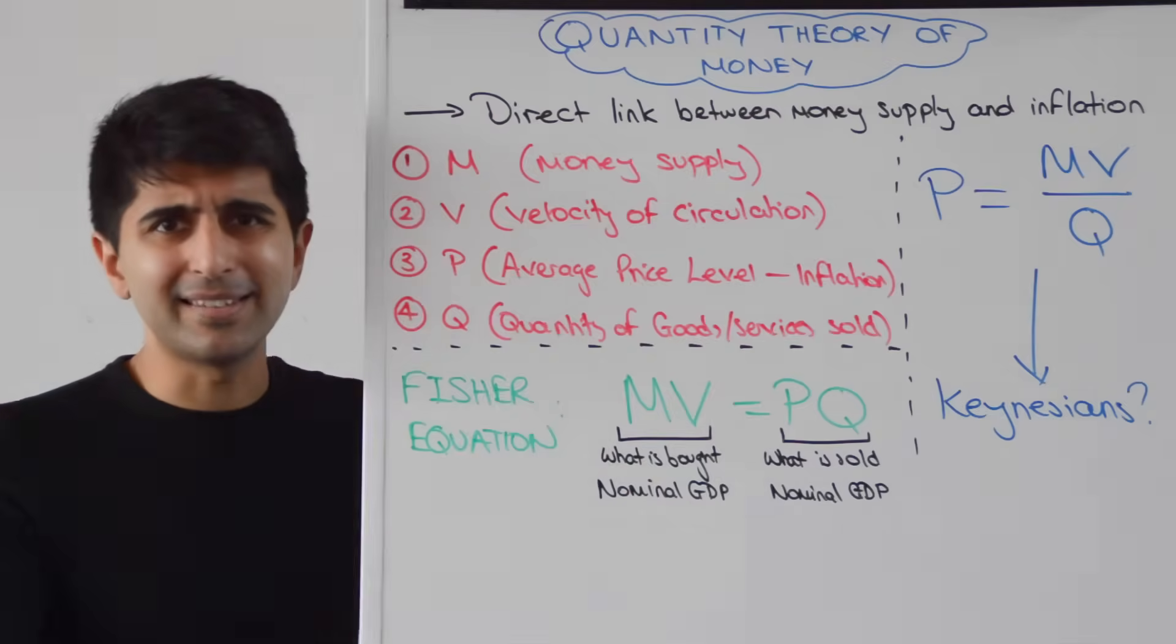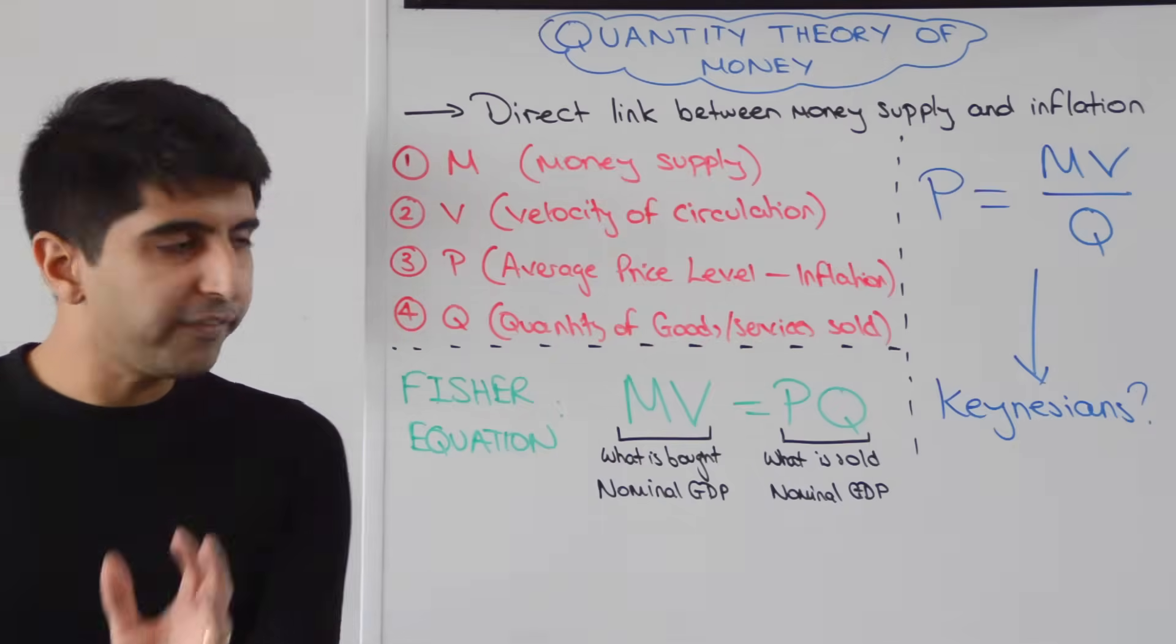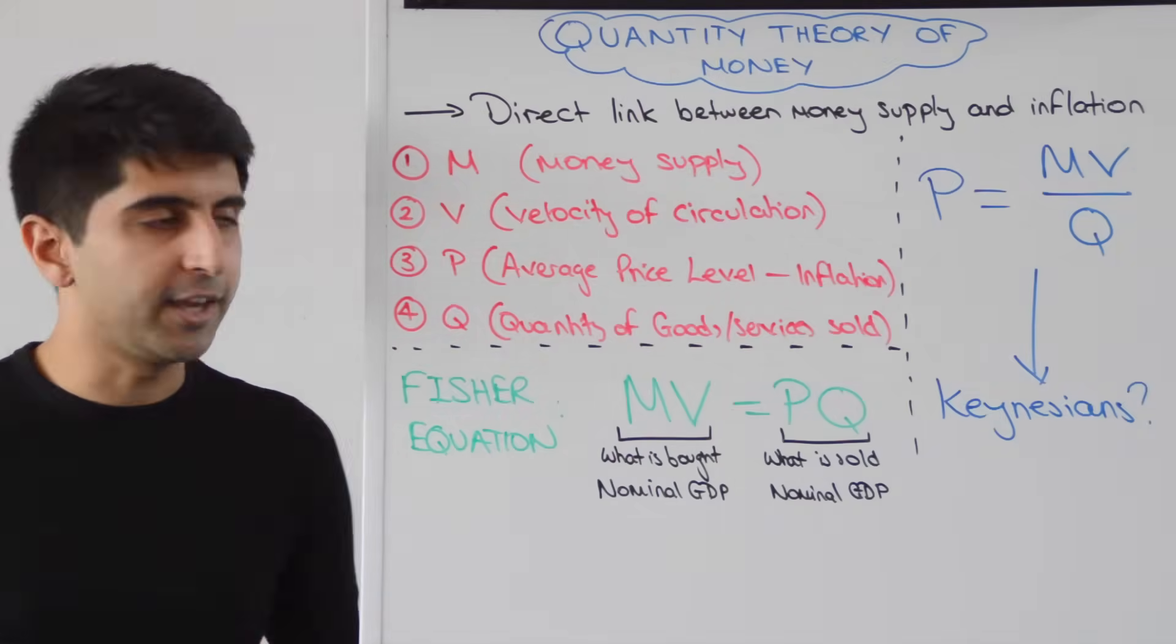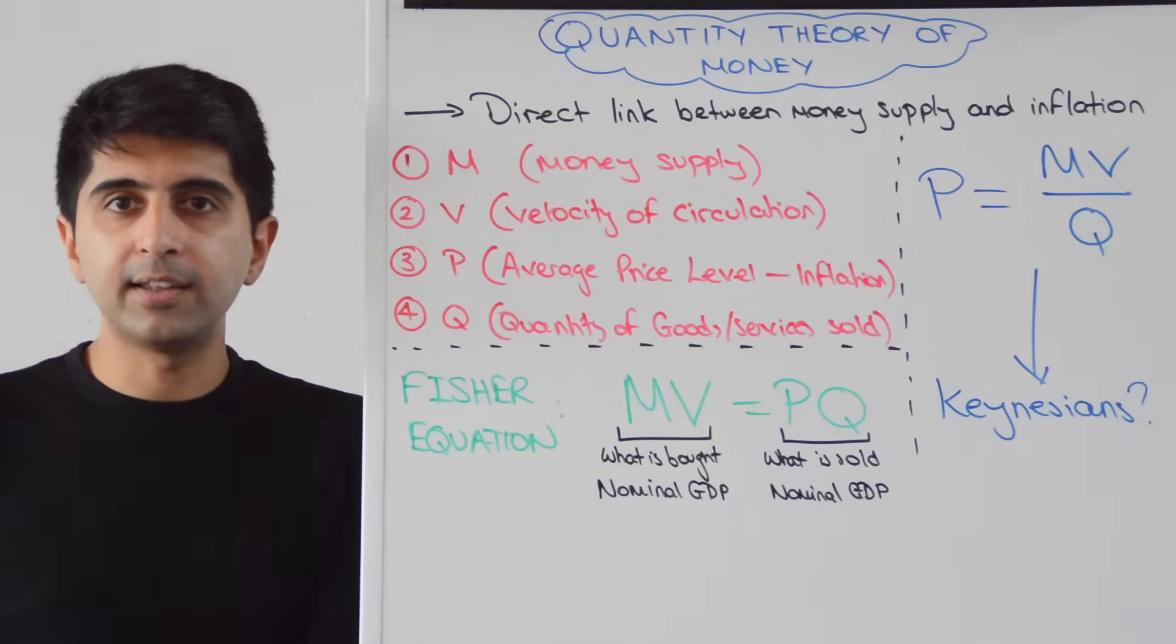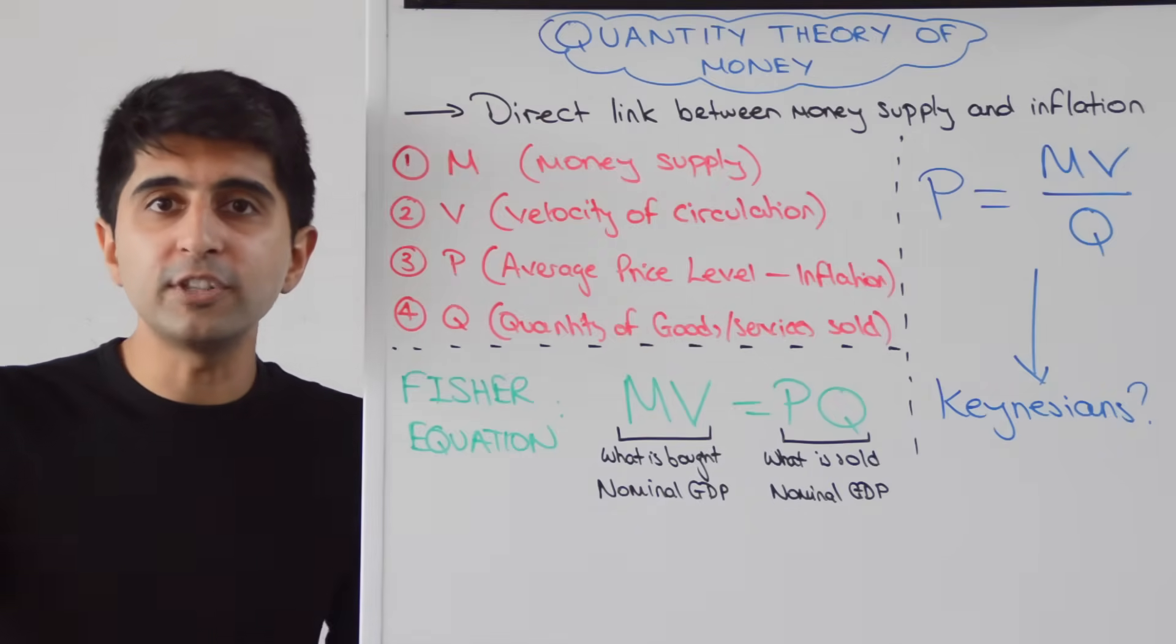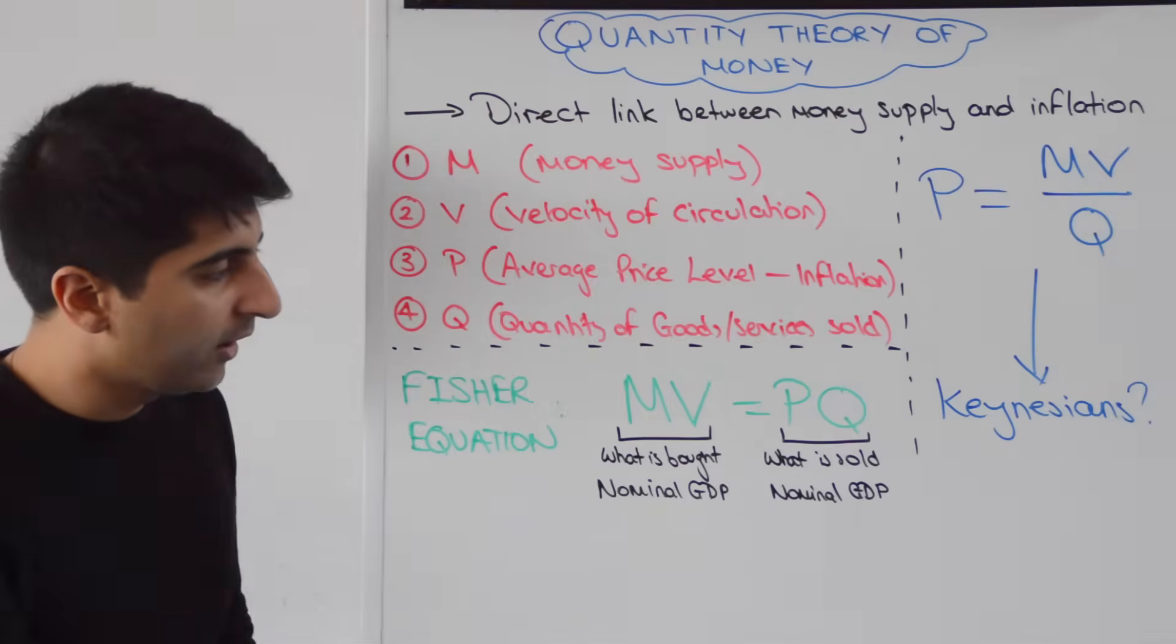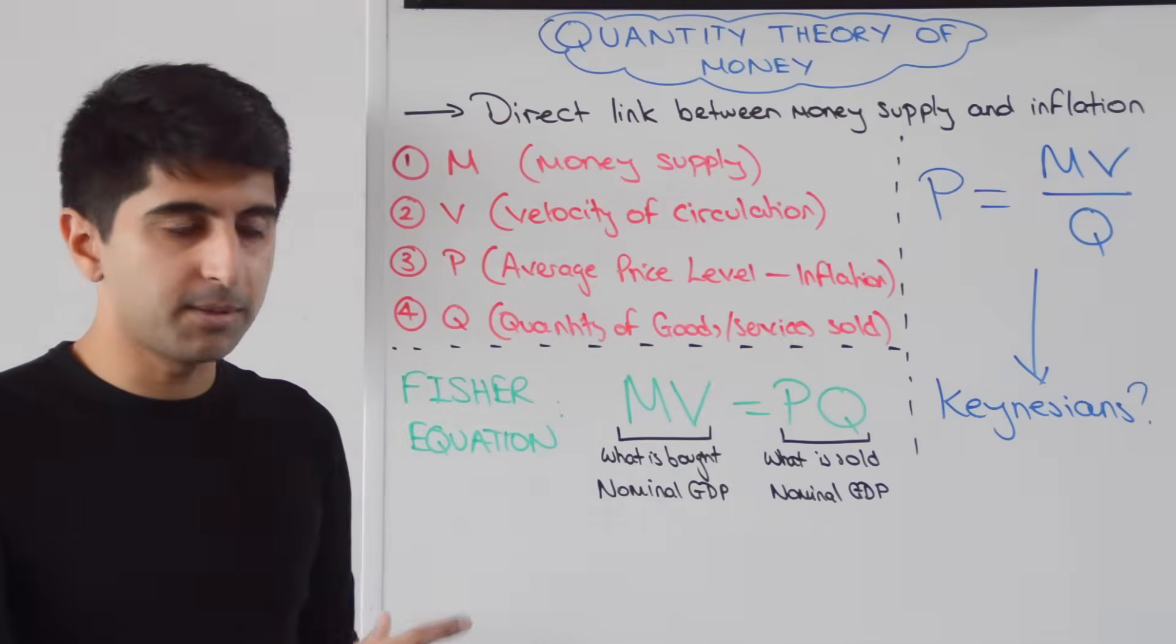That then takes us to this crucial, crucial identity, which is the Fisher equation. Now, by definition, MV must equal PQ. Let's understand. The left side of the equation is the expenditure side of the equation, the consumption side of the equation, where you've got the total amount of money circulating in the economy, i.e. the money supply, multiplied by the number of times that we're using it, the number of transactions taking place with that money supply. That gives us the total amount of spending taking place in the economy. That is the expenditure method to get GDP. That is nominal GDP right there, the expenditure method.